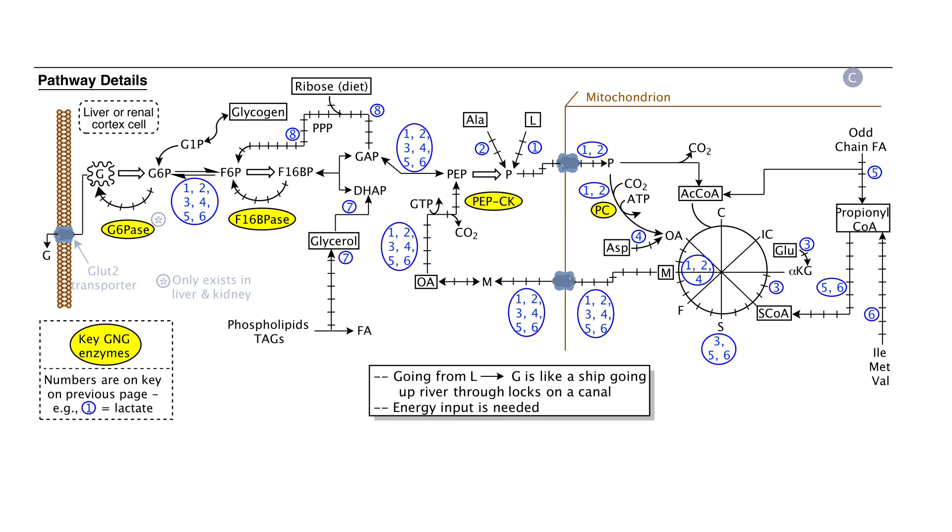Gluconeogenic precursors indicated by number 6 are the amino acids isoleucine, methionine, and valine. These are, once again, way over on the right-hand side of the figure. These amino acids are also converted to propionyl CoA, and just as with the odd-chain fatty acids, they will be converted into succinyl coenzyme A. Then their atoms follow the pathway all the way back to glucose, as we've seen now several times.